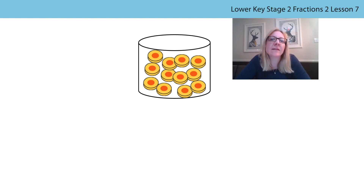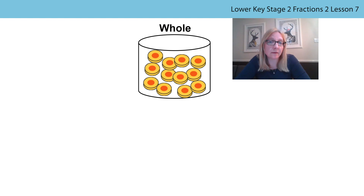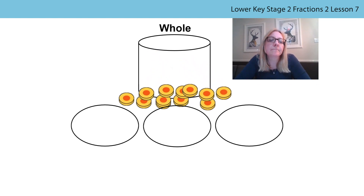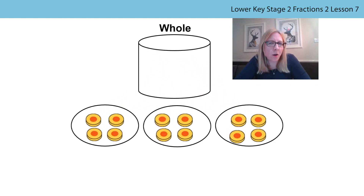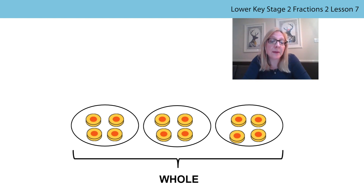I have 12 biscuits in my biscuit jar. This time this is the whole. Just like in previous lessons you looked at different shapes, paper strips, Lego blocks or even containers that represented the whole. This time my 12 biscuits are the whole. I am going to share these between three plates. Has my whole changed? No. My whole is still the same 12 biscuits but now they have just been shared between three plates.